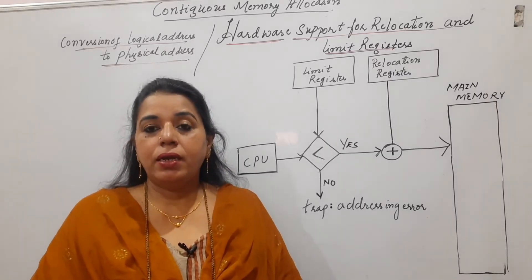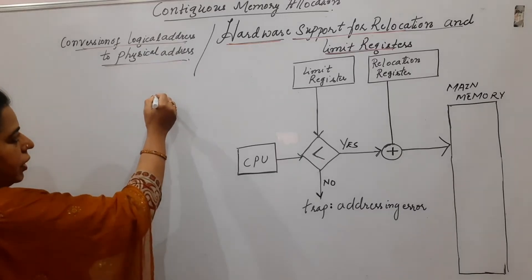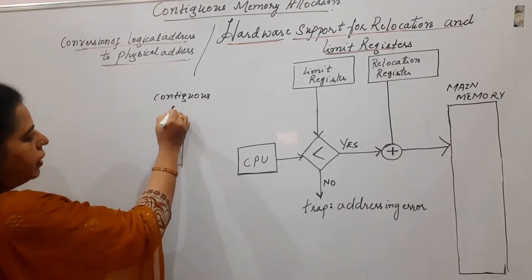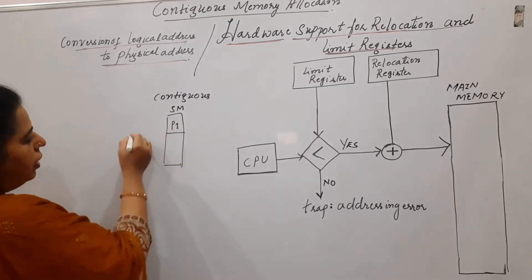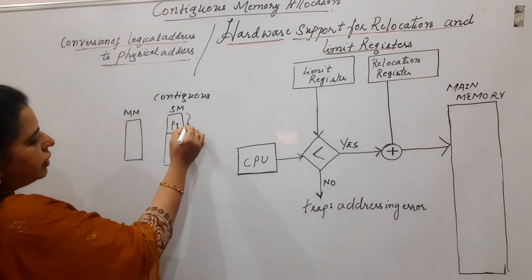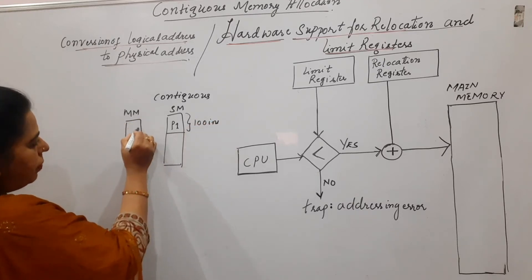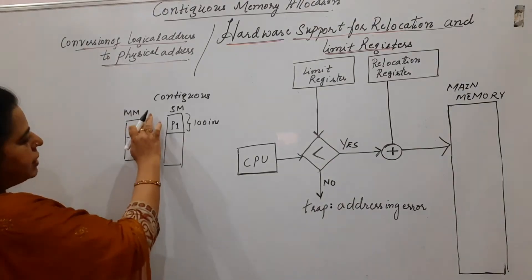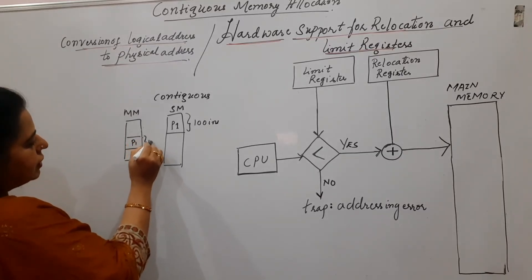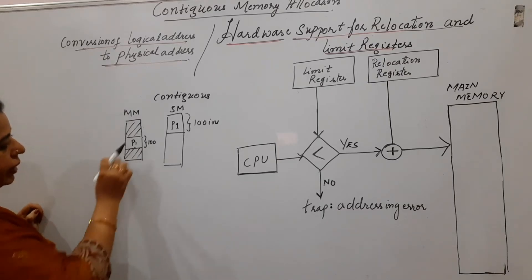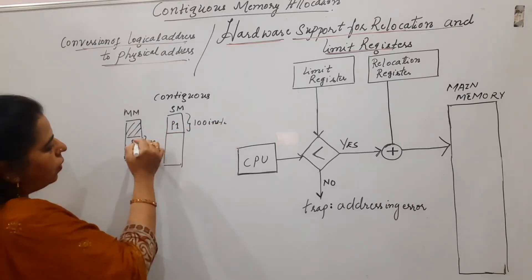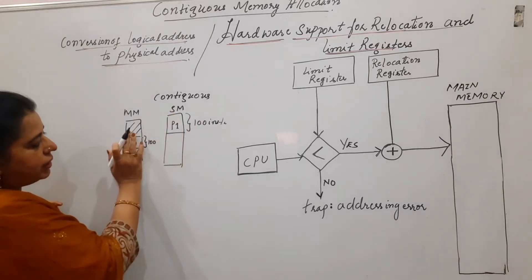Now, in that particular method, the meaning of contiguous is: if there is a process P1 in secondary memory which has to be allocated in main memory, and suppose P1 has 100 instructions, all 100 instructions should be placed one after the other continuously wherever you find space in main memory. All instructions must appear contiguously — that means you are placing the 100 instructions continuously.